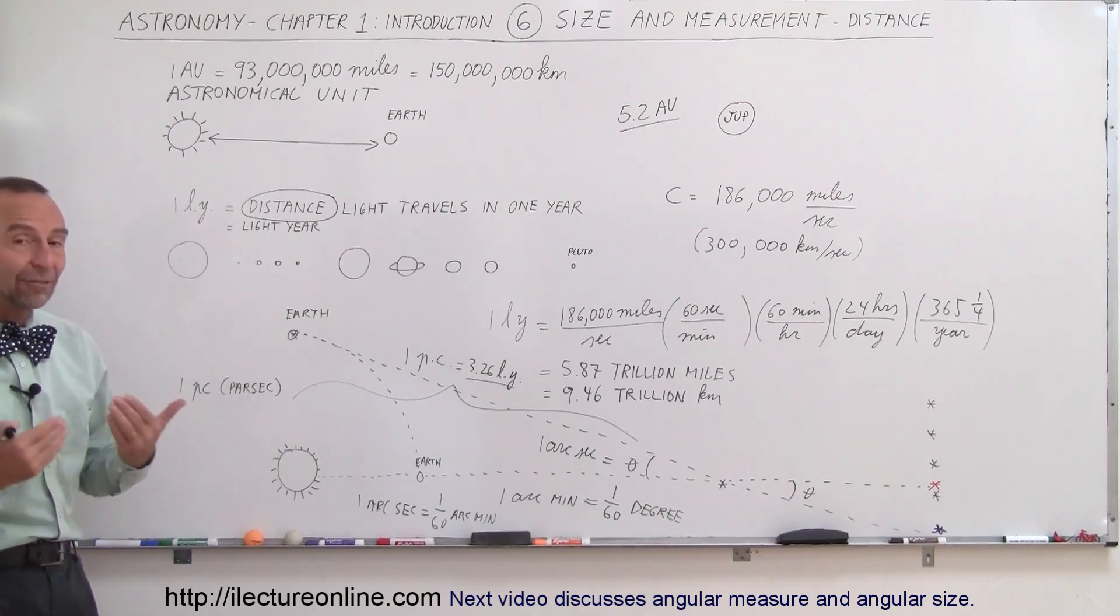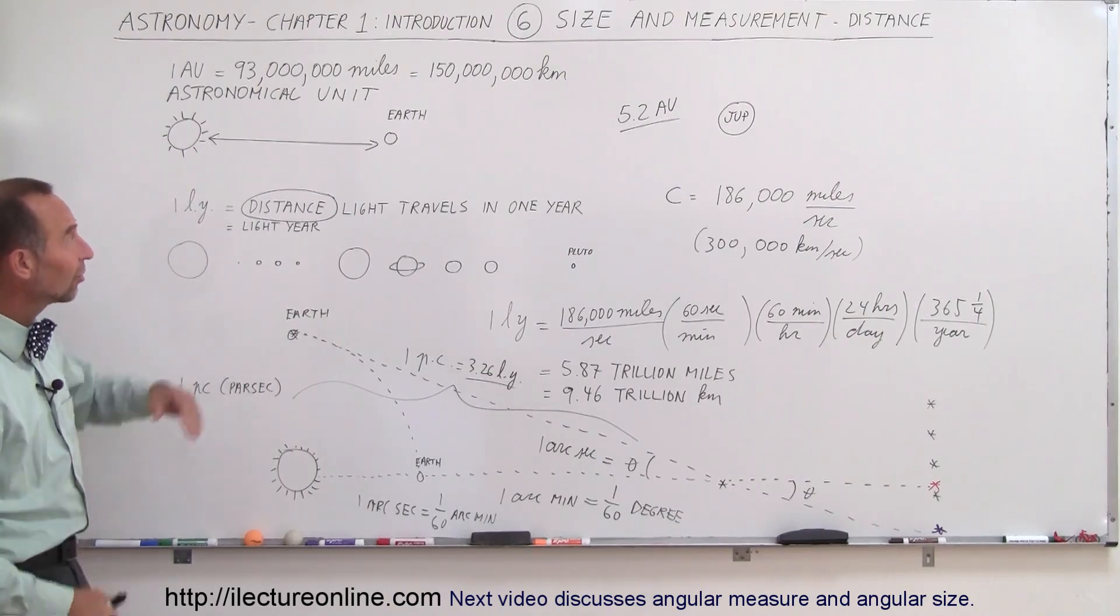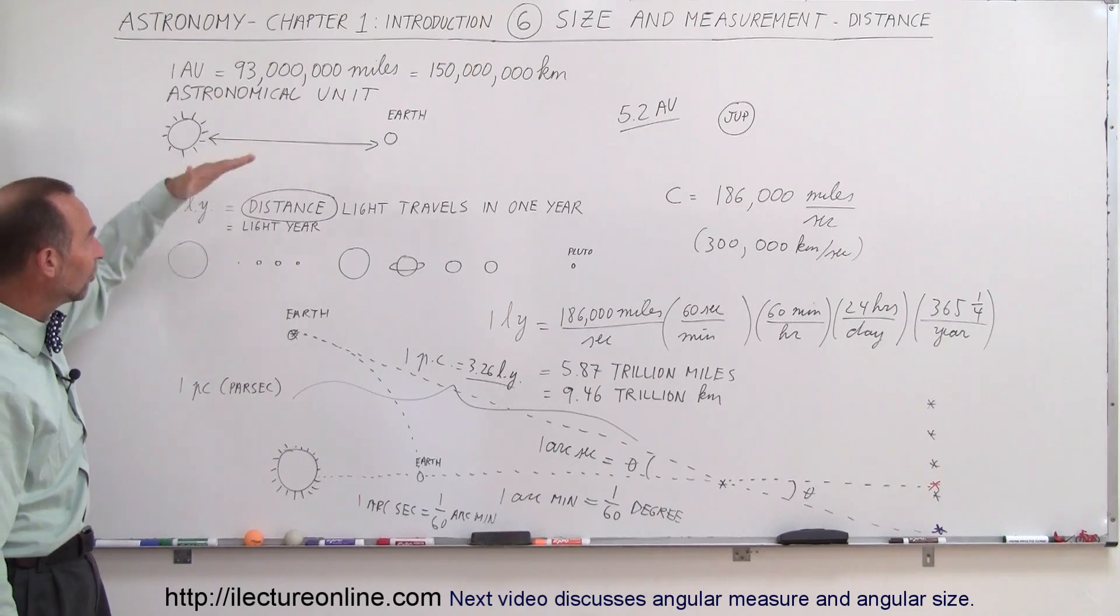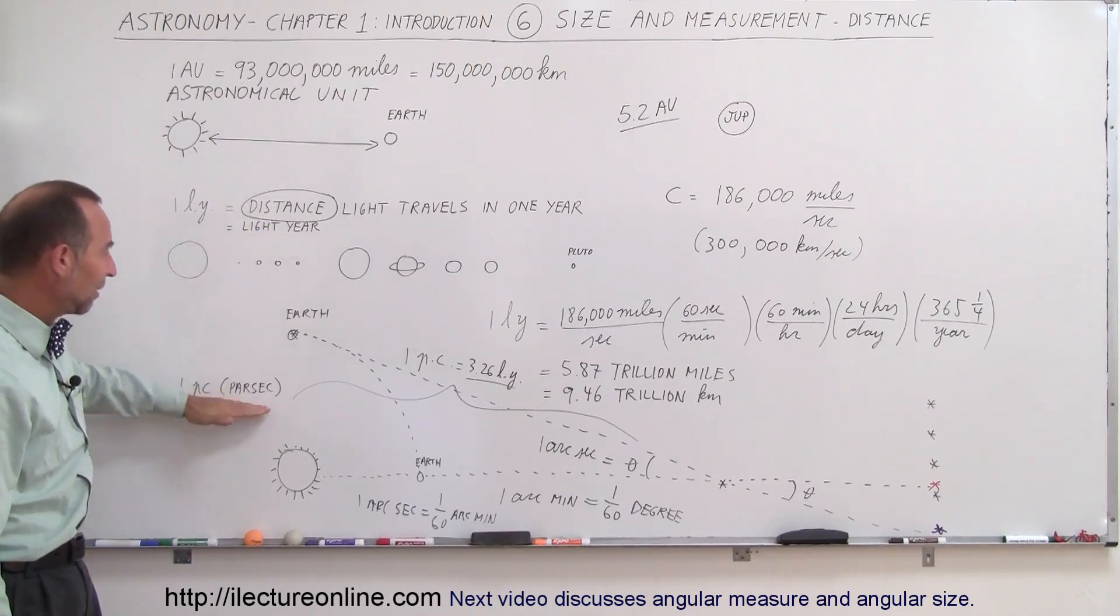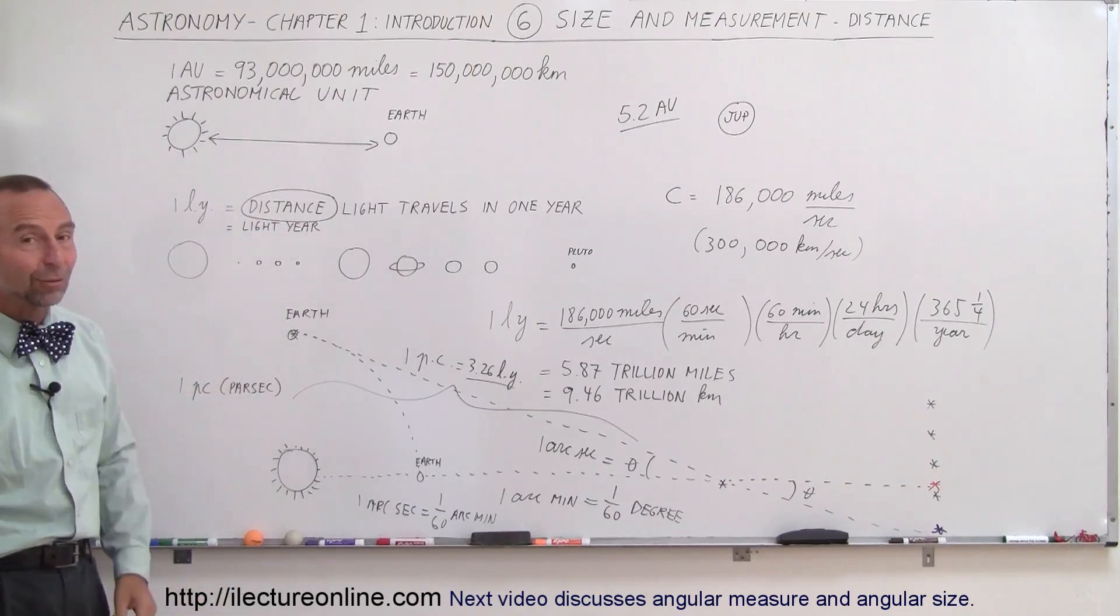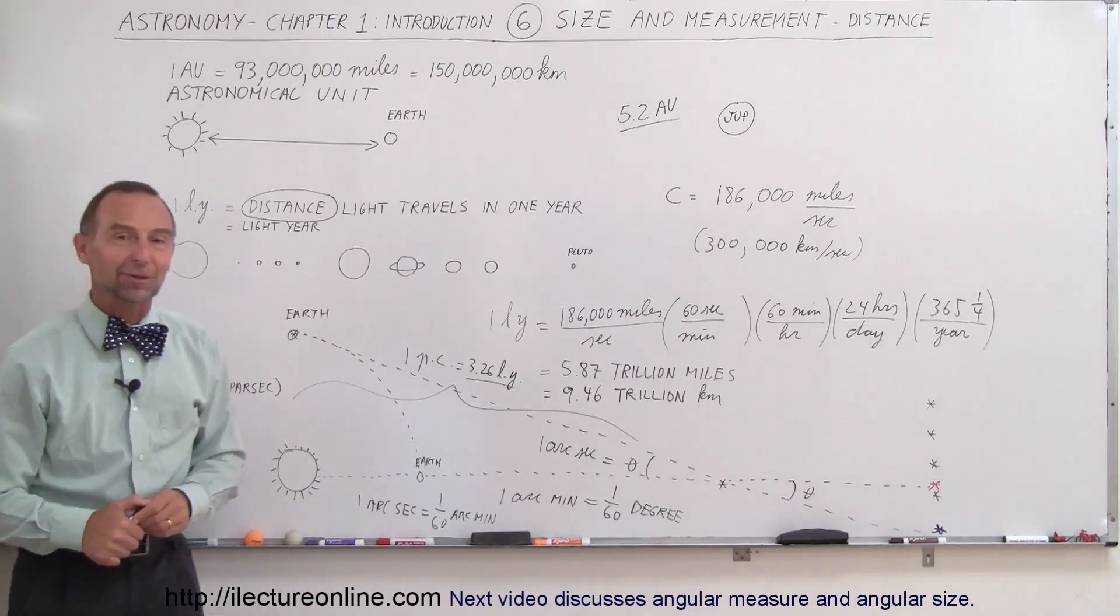So those are the three kind of measurements that we use in astronomy to measure distance. We have this astronomical unit, we have the light year, and we have the parsec. And you'll see all three of them in typically any astronomy textbook.